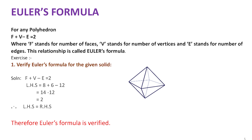Let us verify Euler's formula using an example. The figure on the screen is an octahedron. First, note the values: faces = 8, vertices = 6, and edges = 12. Write the formula: F plus V minus E equals 2. Substituting, the left-hand side is 8 plus 6 minus 12, which equals 14 minus 12, which equals 2. This is equal to the right-hand side. Thus, Euler's formula is verified.